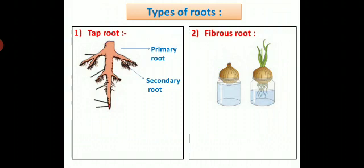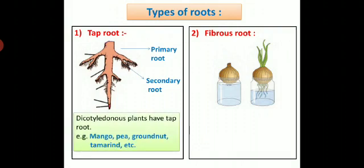You can observe taproot and fibrous roots in this diagram. In taproot, there is a primary root and secondary root branches from a taproot. Dicotyledonous plants have taproot, for example mango, pea, groundnut, tamarind, etc. show taproot.